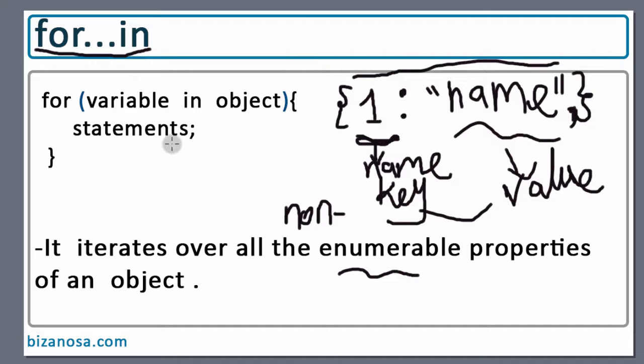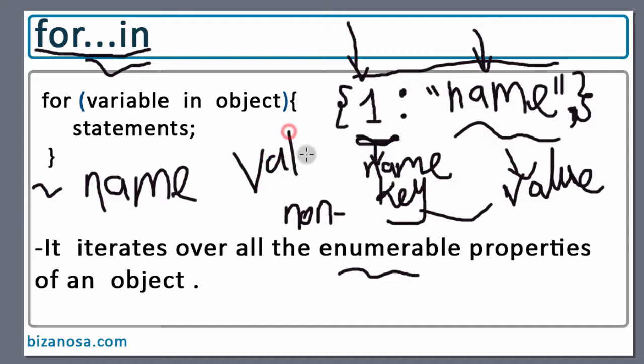And one thing to note when you're iterating over properties in an object: if you use a for...in loop, it will always bring back the name. It will not bring back the value. We are going to see an example of this and exactly what I mean when I say that. If you iterate with a for...in loop, it will bring back the name and not the value. And the name is also the key. We're going to see an example in a little while.